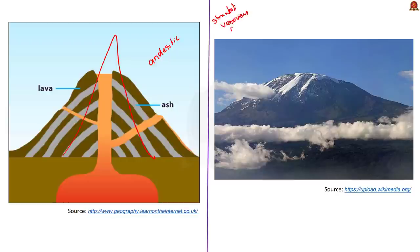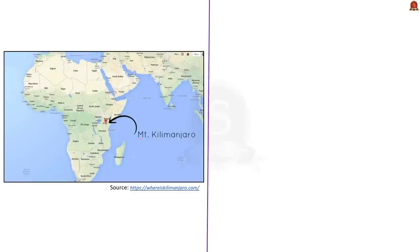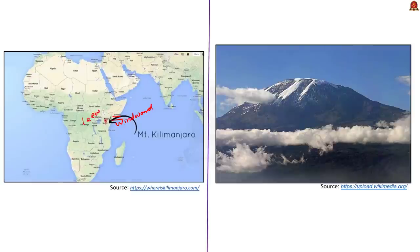The third statement: Kilimanjaro has three volcanic cones — Kibo, Mawenzi, and Shira — and all volcanic cones are dormant. The first part is correct; Kibo, Mawenzi, and Shira are the volcanic cones. Kibo is the highest point. However, only Mawenzi and Shira are extinct, while Kibo is actually dormant, with the most recent activity occurring some 200 years ago. The last statement says rivers Lumi and Pangani drain Kilimanjaro on the western and southern sides respectively — this is false, as both rivers flow on the wetter eastern side, which faces the sea and is on the windward side. So the correct answer is option A, 1 and 2 only.